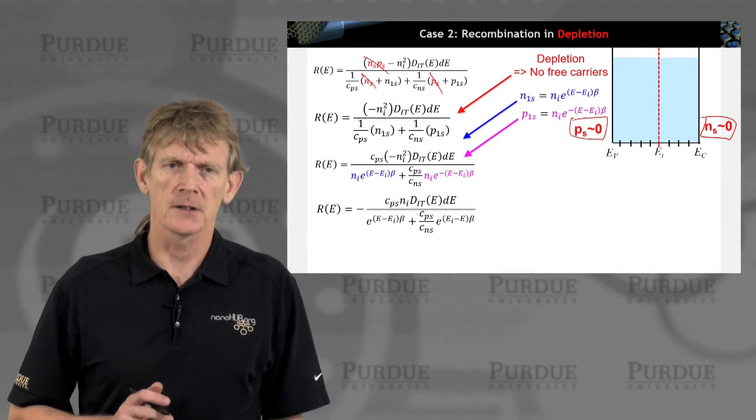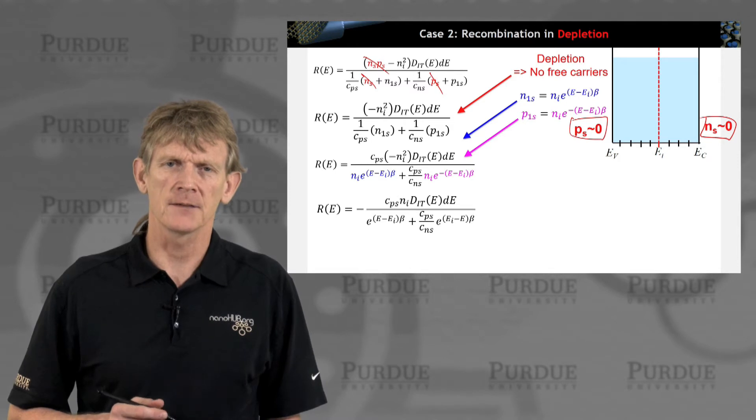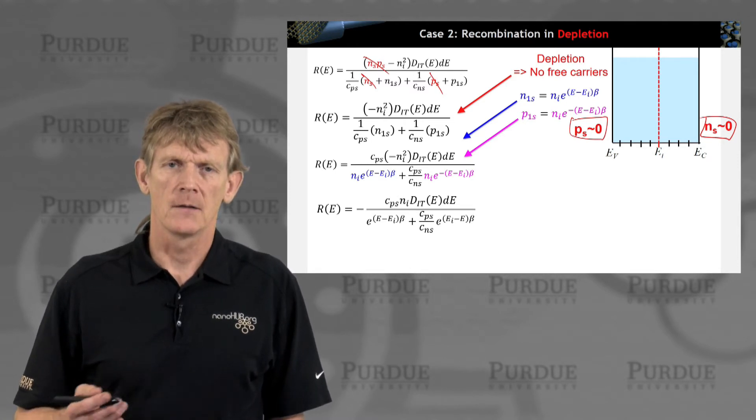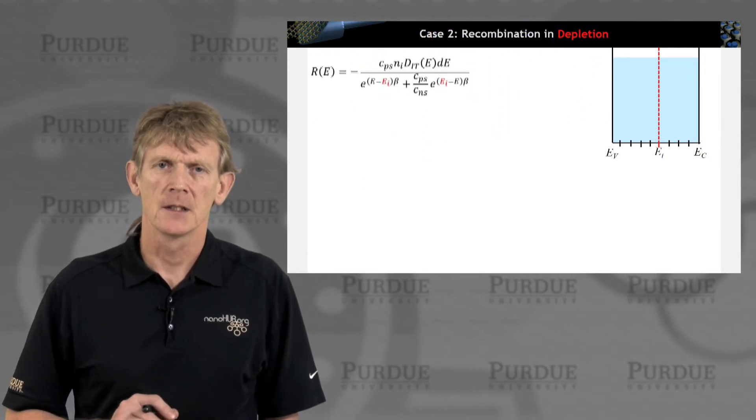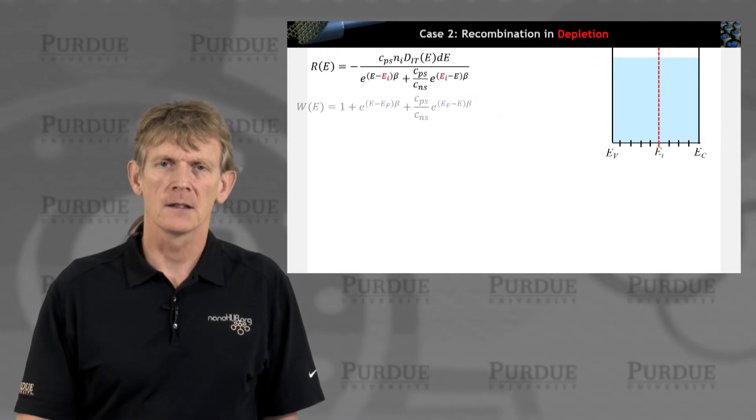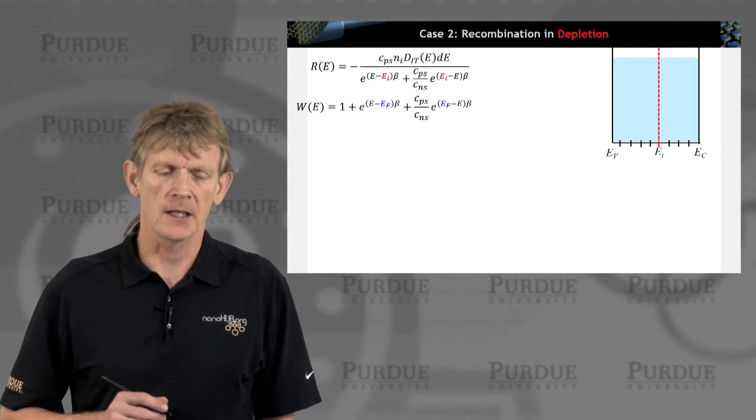We can have an expression for N1s and P1s that we had in the past. We have a recombination rate that has this function in the denominator that starts to be looking familiar. We had this in the case for minority carriers.